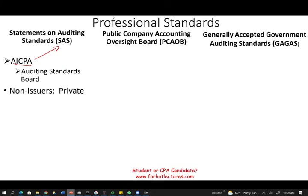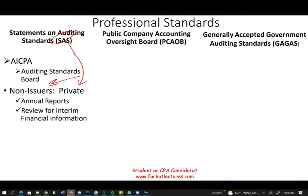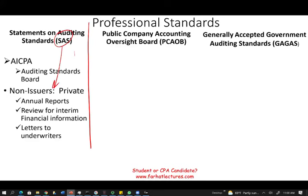The SAS regulates private companies — companies whose stock is not publicly traded. So when auditing PepsiCo, Microsoft, Apple, or Amazon, you don't follow the SAS because those are public companies. If you're auditing Wegmans or Wawa, those are private companies — that's where the SAS applies. SAS applies to private, non-issuer companies: their annual reports, interim financial statements, and letters to underwriters.